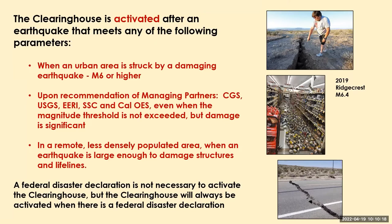The pictures on the right show some of the first images from the 2019 Ridgecrest magnitude 6.4 on the 4th of July. We were trying to assess — it was in a rural area, the epicenter about 11 miles outside the town of Ridgecrest. The China Lake Naval Air Weapons Station to the north is all secured land, so no public imagery came from there. We started seeing cracks in the road and ground, and after conversations between CGS, ERI, Cal OES, USGS, and the Seismic Safety Commission, by end of day it was declared that the clearinghouse would activate at Ridgecrest.